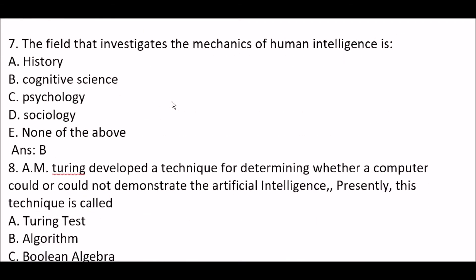Next question: the field that investigates the mechanisms of human intelligence is — Option A: history. Option B: cognitive science. Option C: psychology. Option D: sociology. Option E: none of the above. The right answer is Option B — cognitive science.